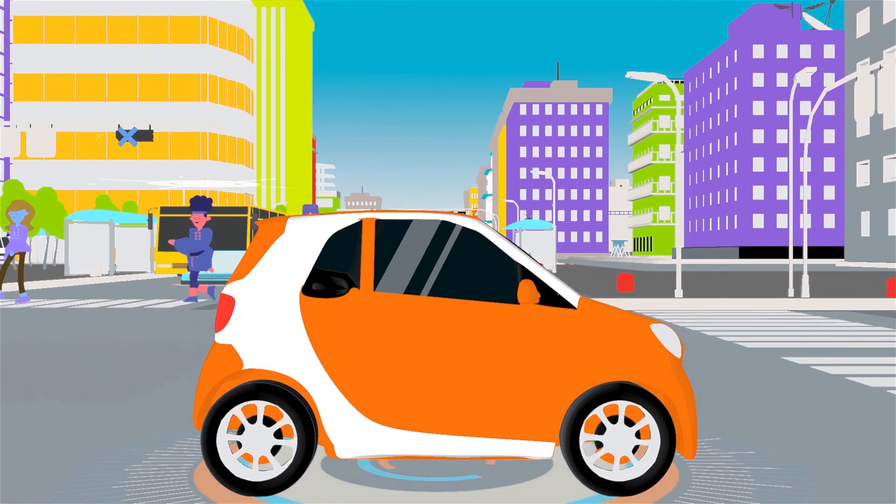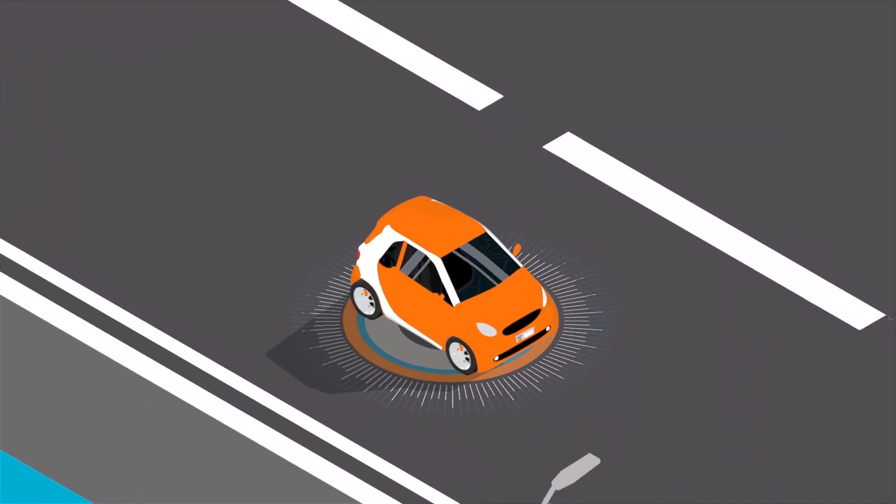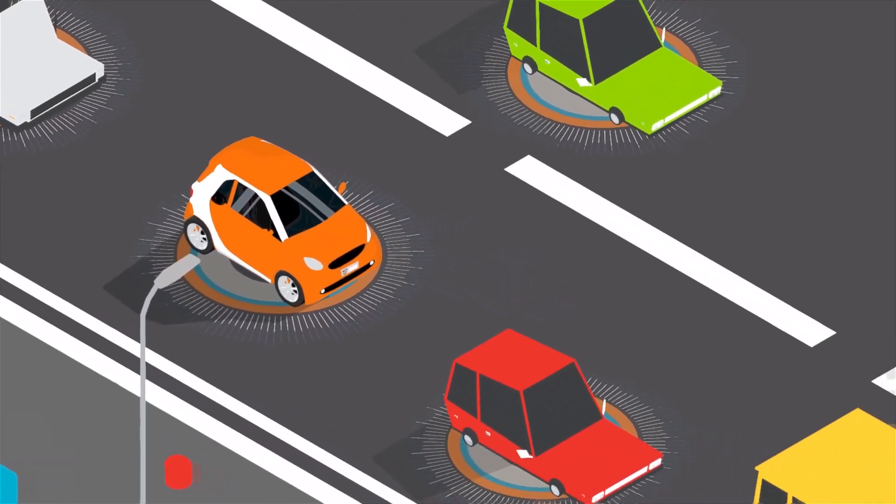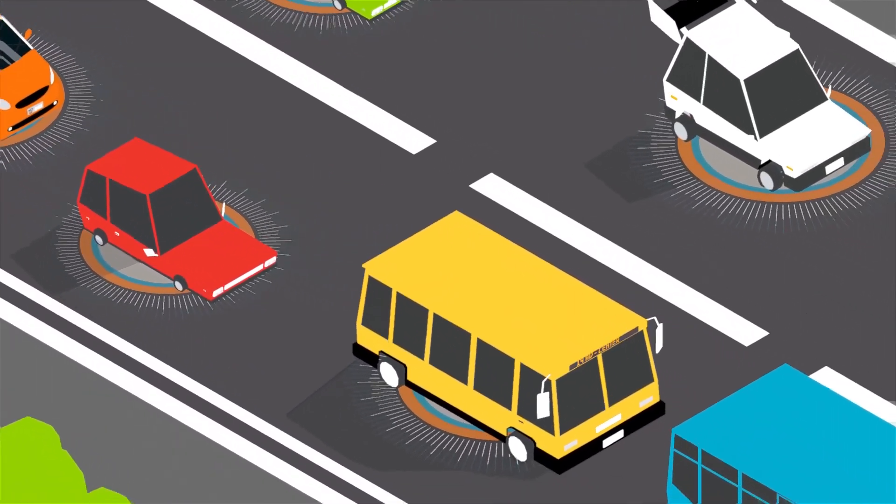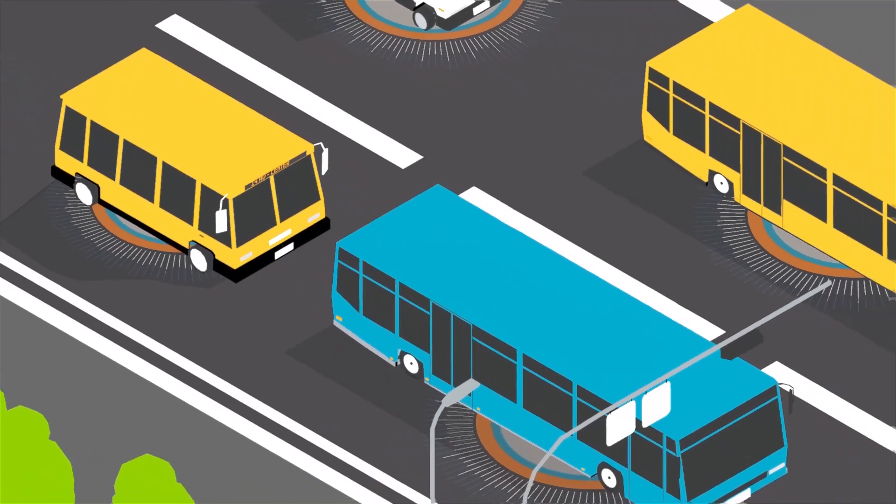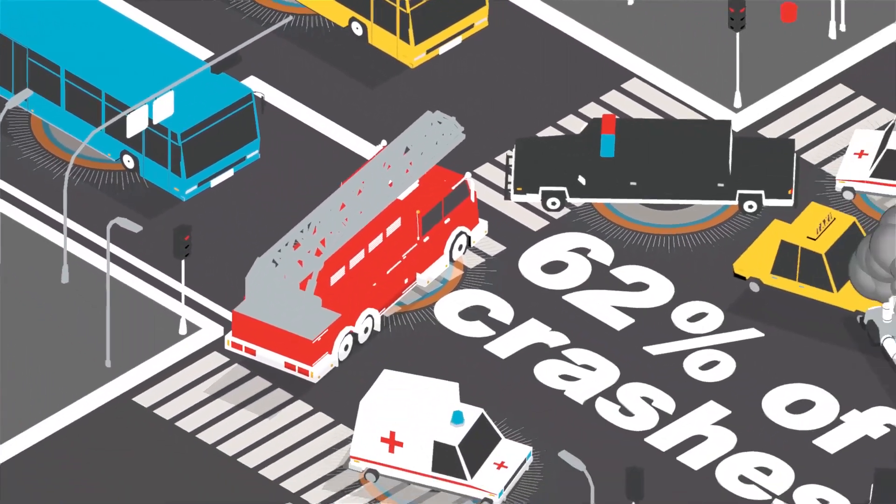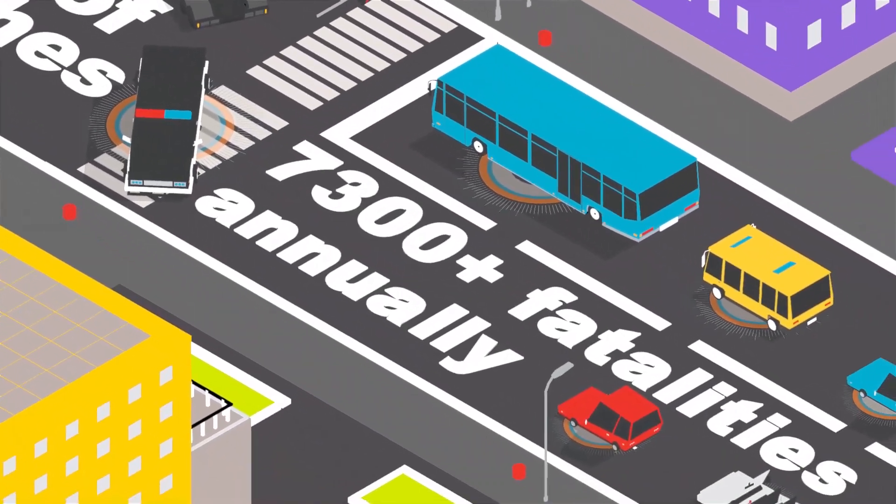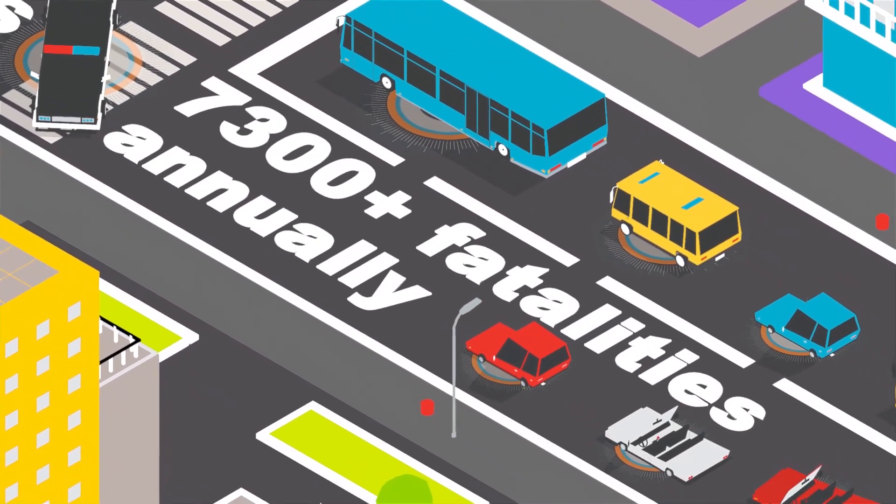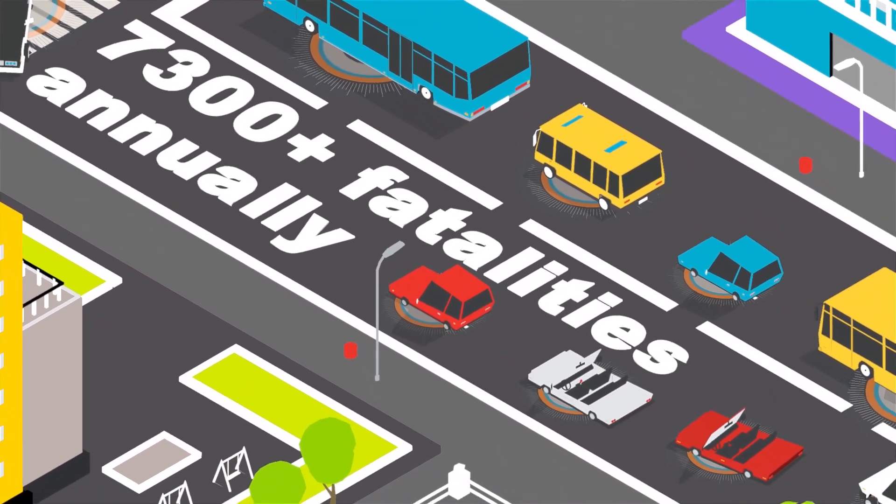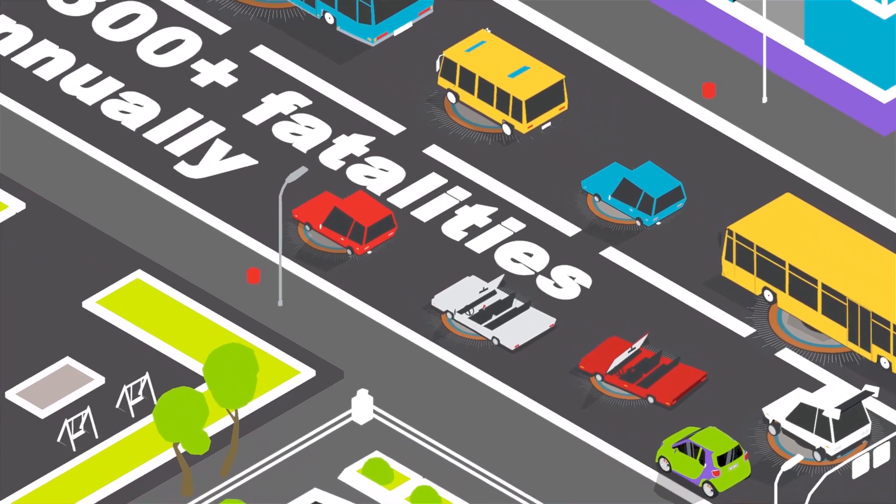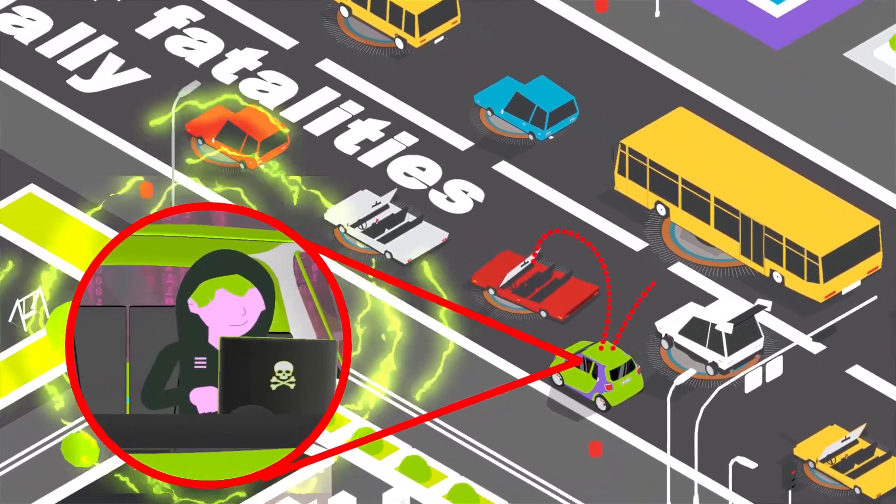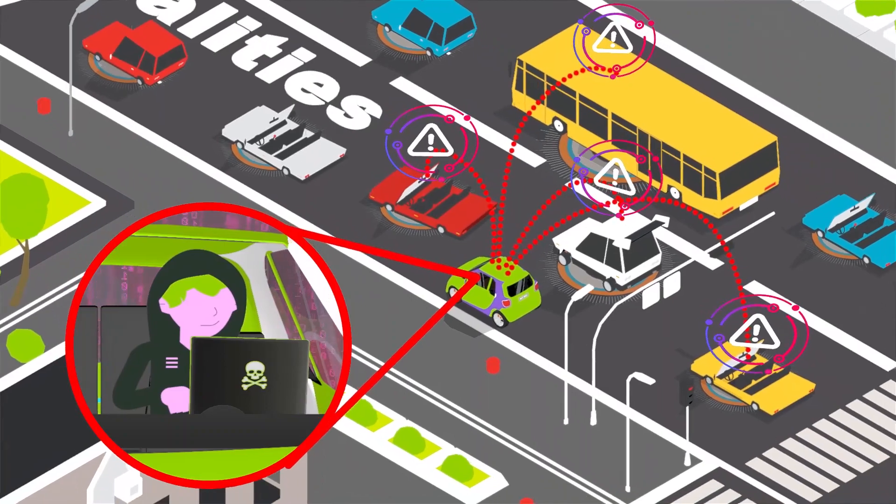However, manufacturers must now consider how these vehicles will securely talk to each other via vehicle-to-vehicle or V-to-V communications. V-to-V-based warning technologies could help prevent 62% of crashes and over 7,300 fatalities annually in the United States alone. But drivers must be assured that these new systems are designed securely to protect against hackers who might try to undermine these safety systems.